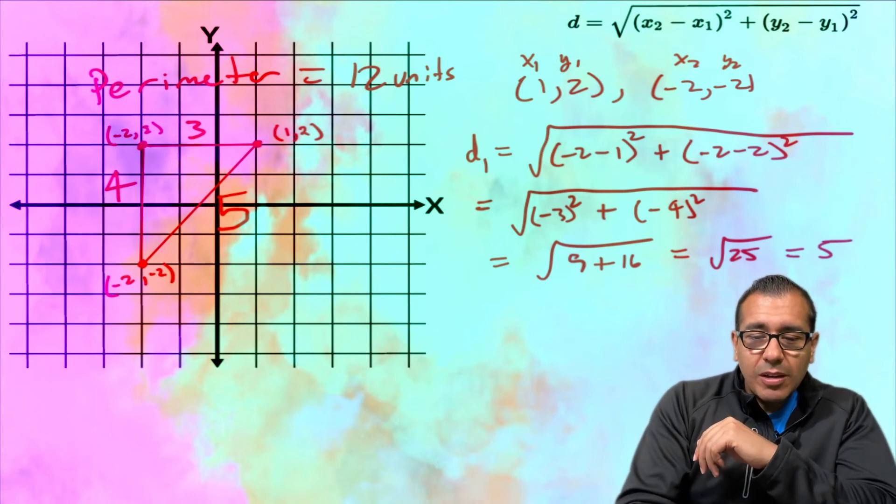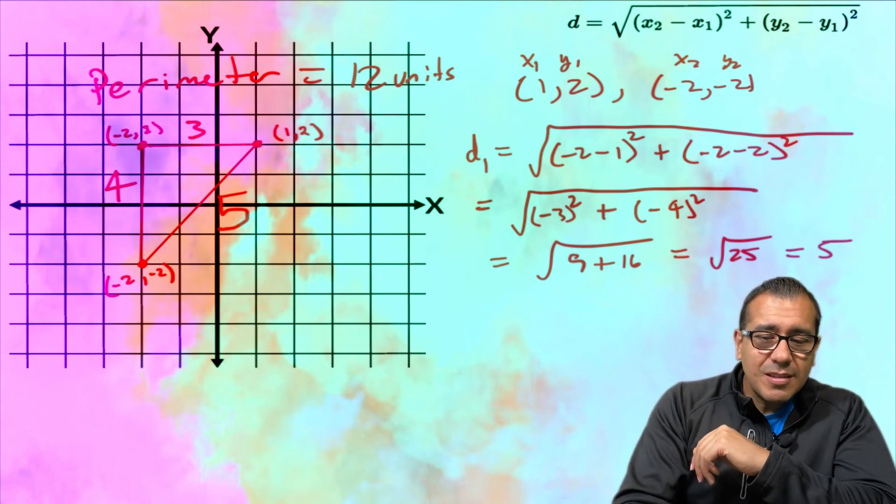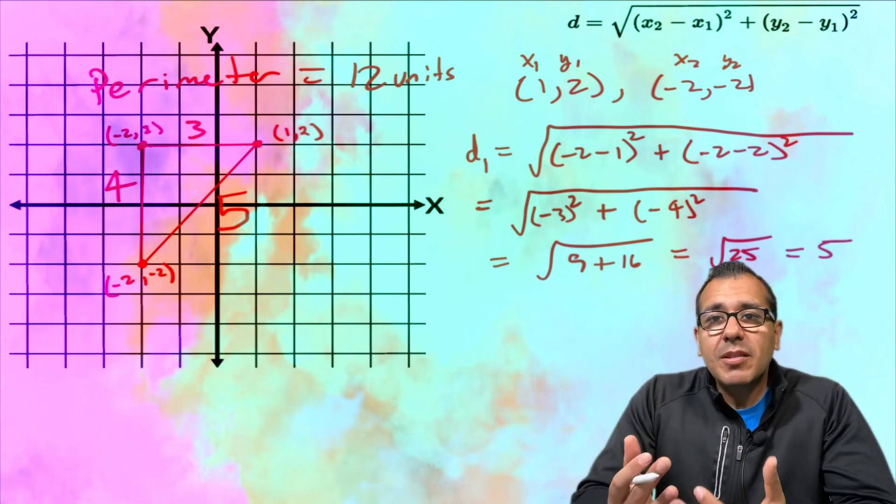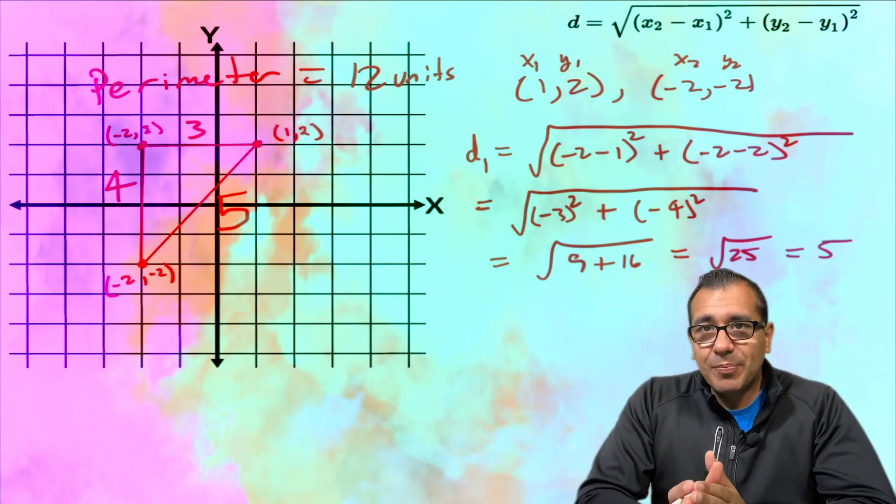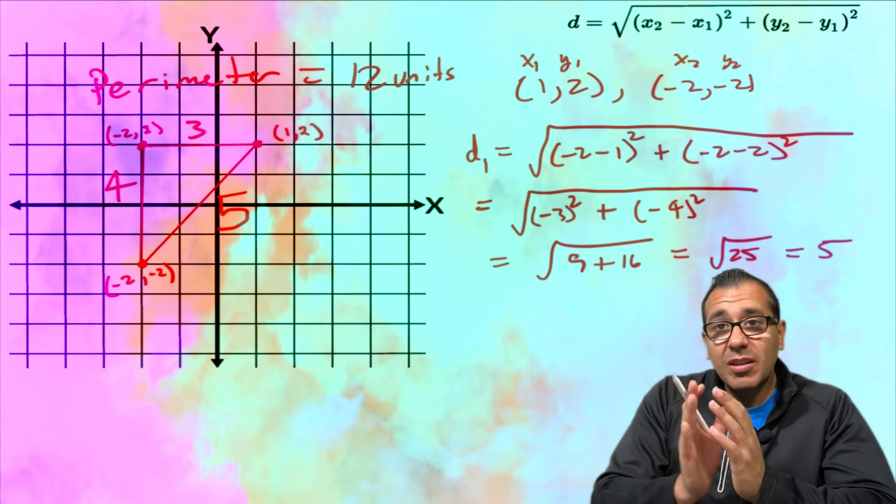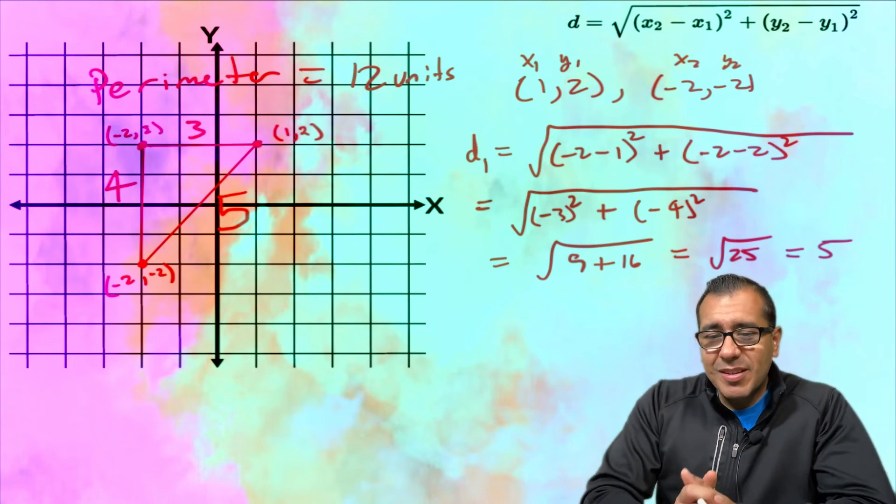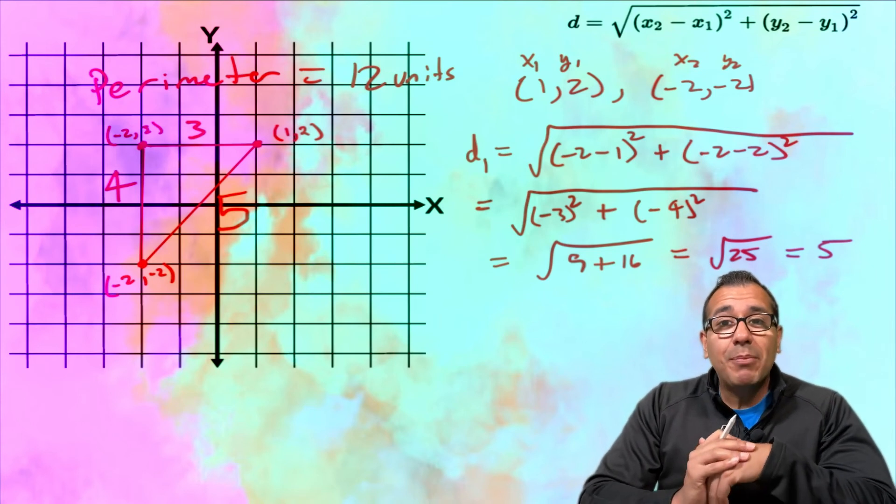And some of you might be asking wait Dr. Math, isn't this a right triangle? If you had this distance and this distance couldn't you use the Pythagorean theorem to find this distance? Absolutely, that's the beauty of math - there's going to be multiple paths.